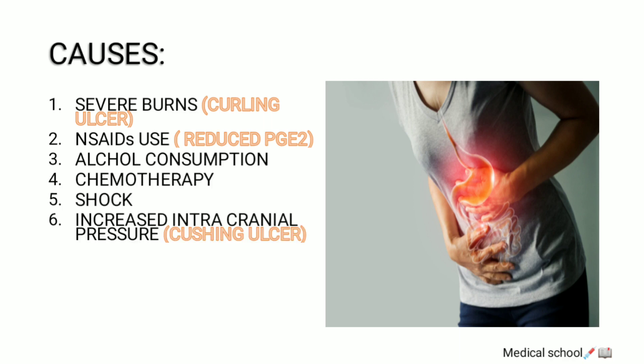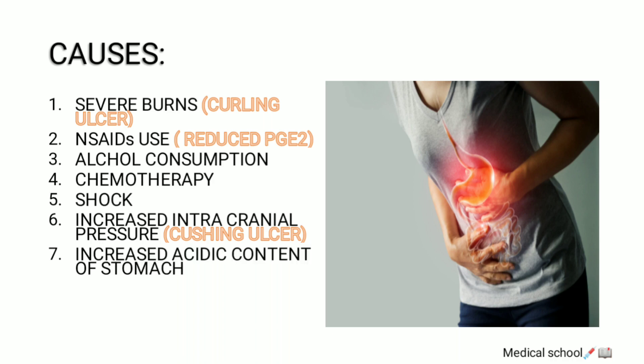Other causes include chemotherapy, shock, and increased intracranial pressure, which is called a Cushing's ulcer. In this condition, the vagus nerve is stimulated, so more and more gastric acid is produced, increasing the acidic content of the stomach. All these conditions may lead to ulcerations, erosions, and superficial inflammation.